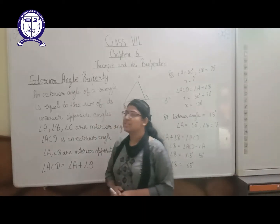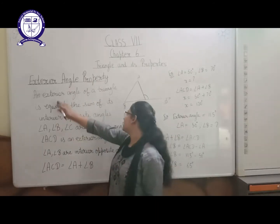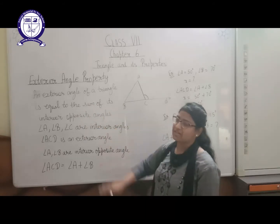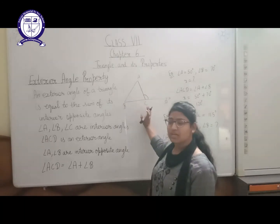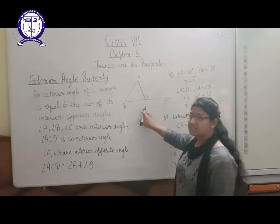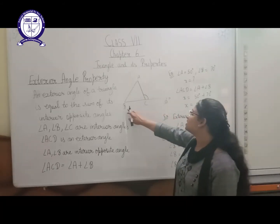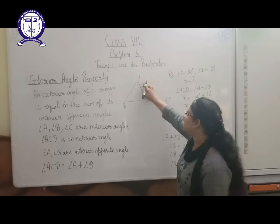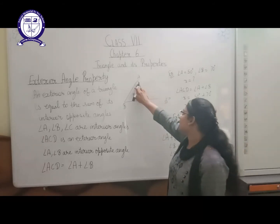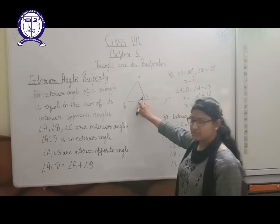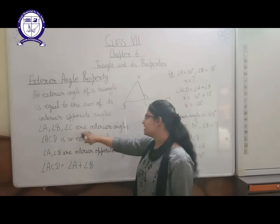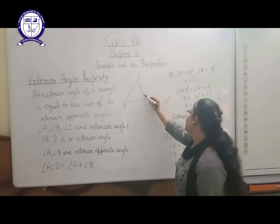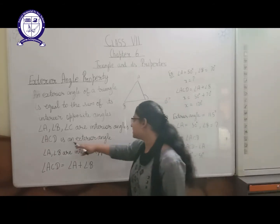Our next topic is the exterior angle property. An exterior angle of a triangle is equal to the sum of its interior opposite angles. I have drawn triangle ABC, and D is the point on the produced line of BC extended up to D. We are getting an exterior angle ACD here. Angle A, angle B, and angle C are the interior angles of the triangle, and angle ACD is the exterior angle.